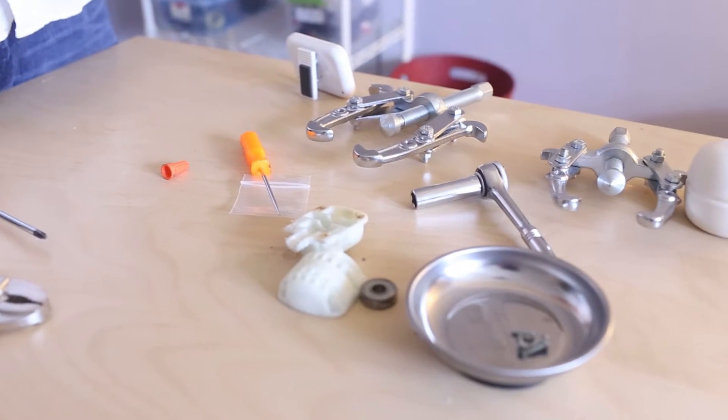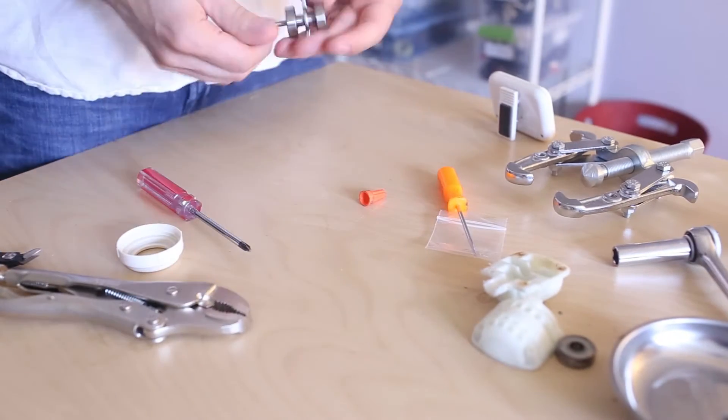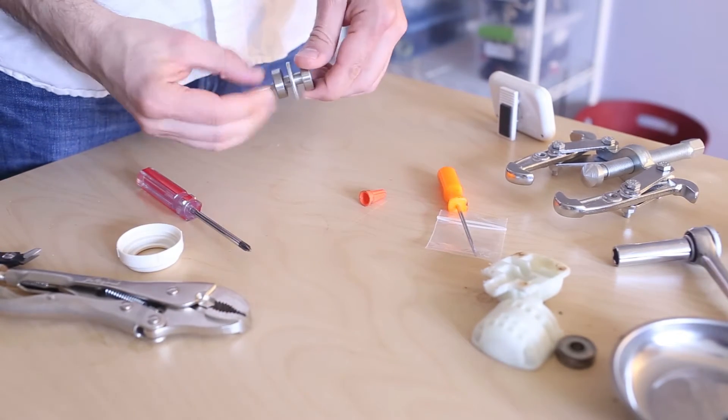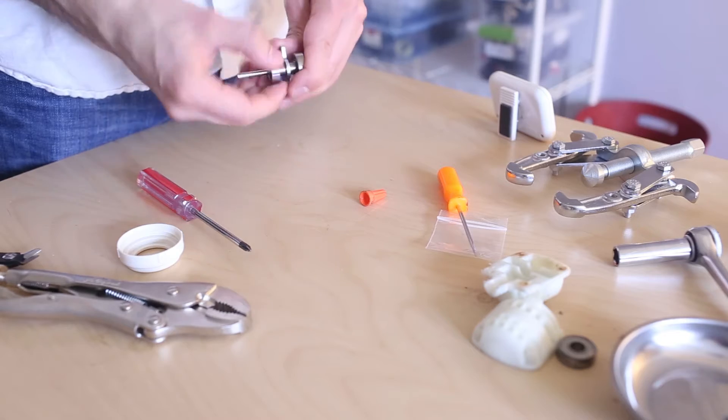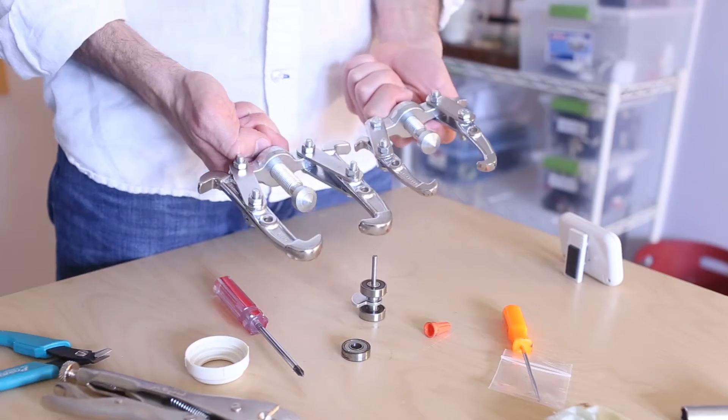So what I'm going to show is the procedure for replacing the bearing. That's the vibratory mechanism. Got your two bearings. This is a jaw puller. They're inexpensive.